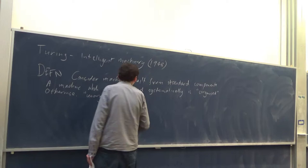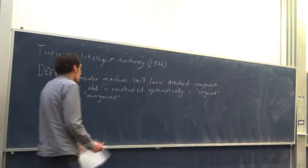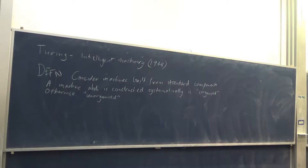This doesn't pretend to be a precise term, but it matches the idea of a machine that's prior to training — a neural network prior to training you would call unorganised. And then after it's been trained and has its weights set appropriately, you would call it organised.